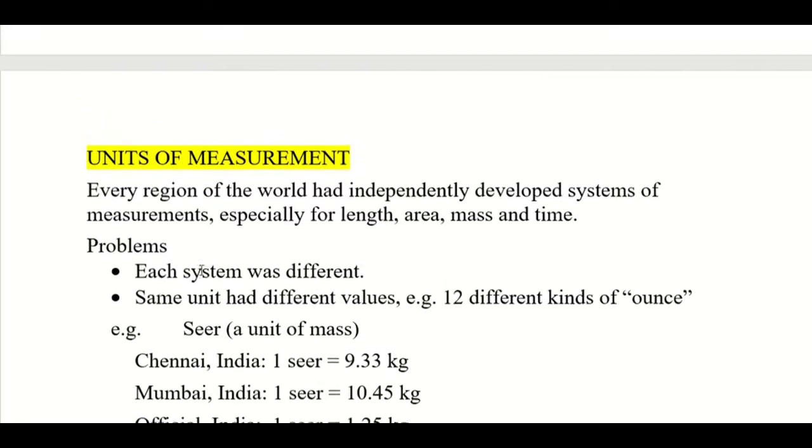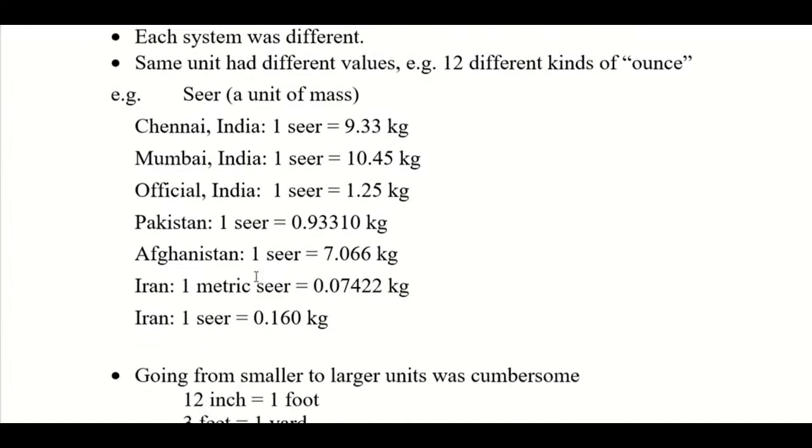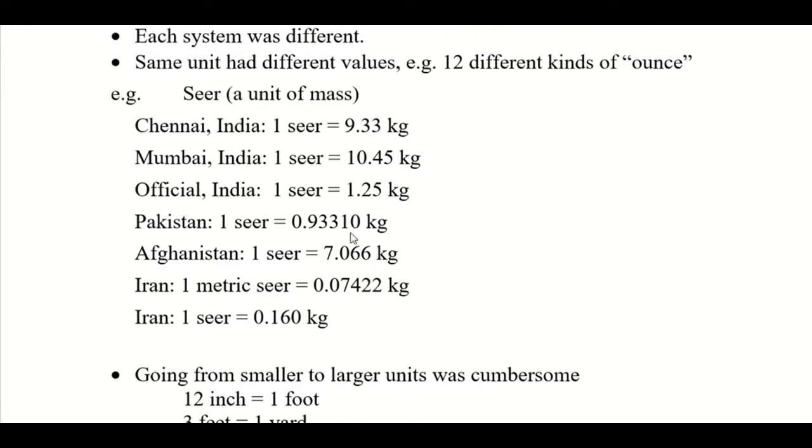As an example, in the unit of mass called a seer, which is now obsolete because we've gone to the international system, within India the official seer was 1.25 kilograms, but even 10 and 9 kilograms for one seer were being used in different towns. In Pakistan it is 0.933 kilograms, in Afghanistan it's 7 kilograms. So the same term in different countries had different meanings, and the same term within the same country had different meanings, same as the ounce.